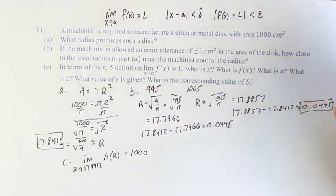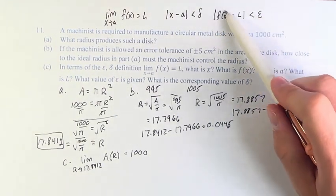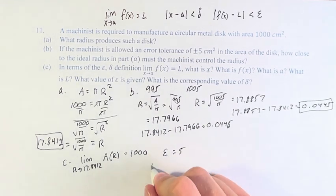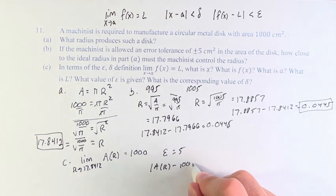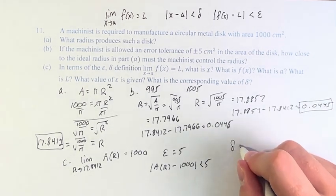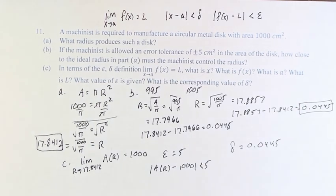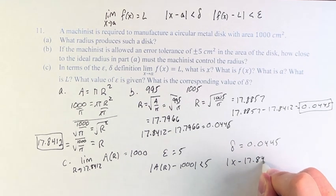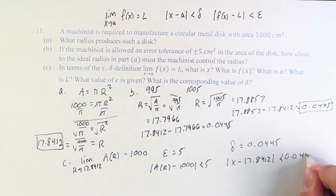What are the values of epsilon? So, that is how close to L we have to get with f of x, and that's 5. Right? Therefore, A of R minus 1,000, the absolute value of that is less than 5. That's how we would put it. The corresponding value of delta is 0.0445. Therefore, x minus 17.8412 is less than 0.0445.